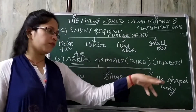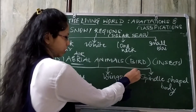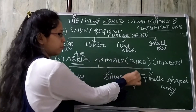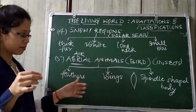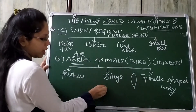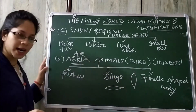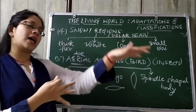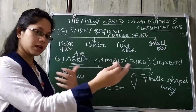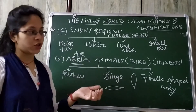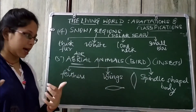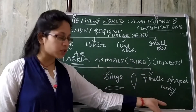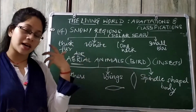Both birds and most aerial animals have spindle-shaped bodies. Spindle shape means it is broad in the middle but thin at the ends. If you see a bird, this is the shape. When it moves forward, air resistance acts in the opposite direction trying to push it back, but the spindle shape helps the animal go forward. You just need to understand this basic adaptation.